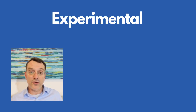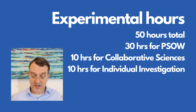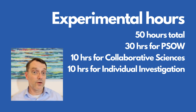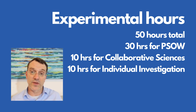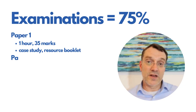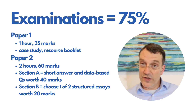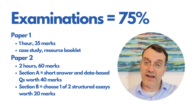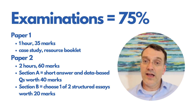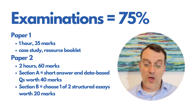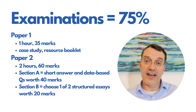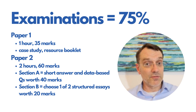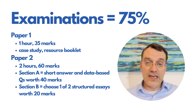In the experimental program we had 50 class hours. Now practical work accounts for 30 hours for both higher level and standard level. The collaborative sciences project, formerly known as the group four project, accounts for 10 class hours, and the individual investigation or internal assessment also accounts for 10 hours. Assessment is going to be pretty much the same — Paper 1 will be a case study with a resource booklet, and Paper 2 is split with Section A of short answers and Section B of structured essays. Those two examinations account for 75% of a student's overall grade and the internal assessment is the remaining 25%.